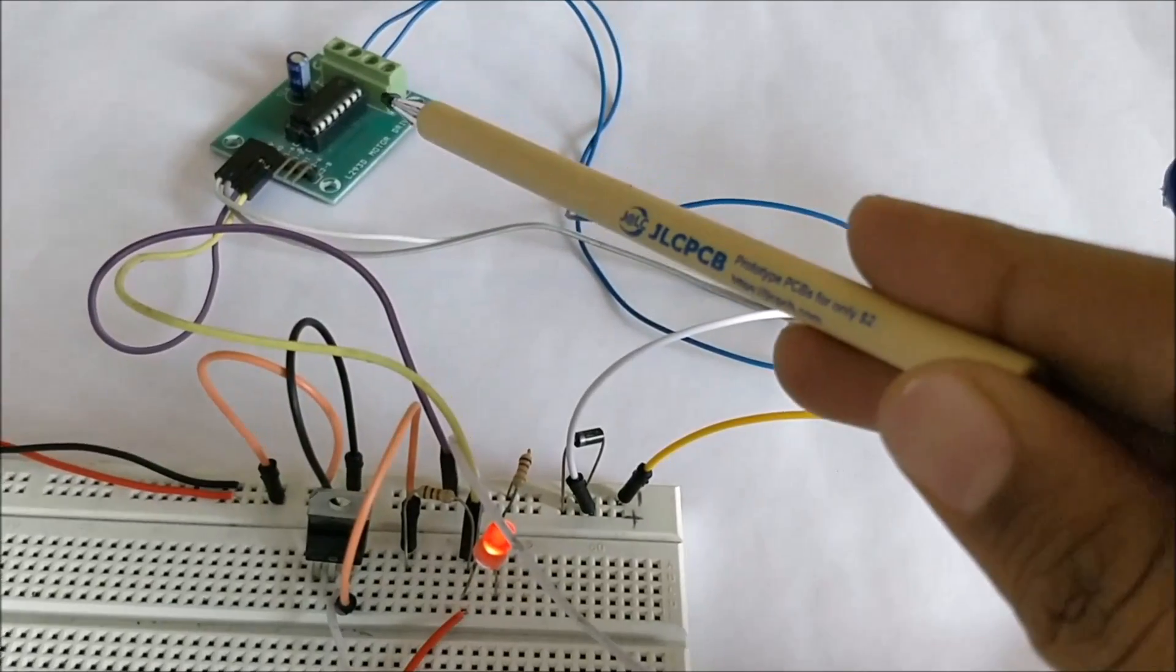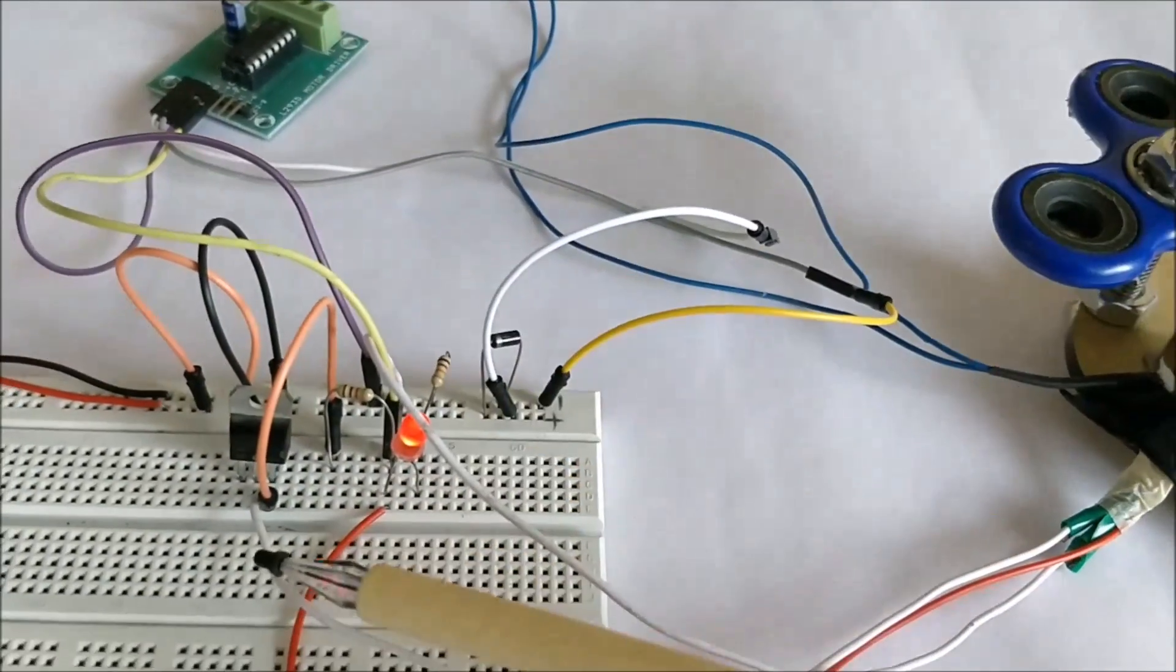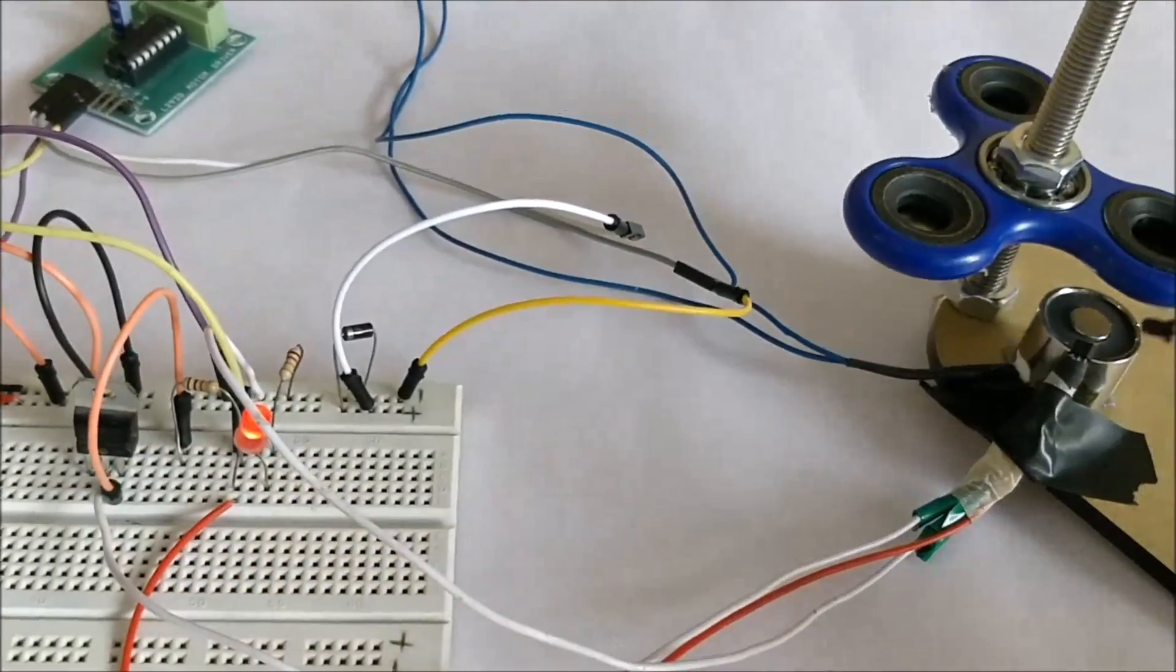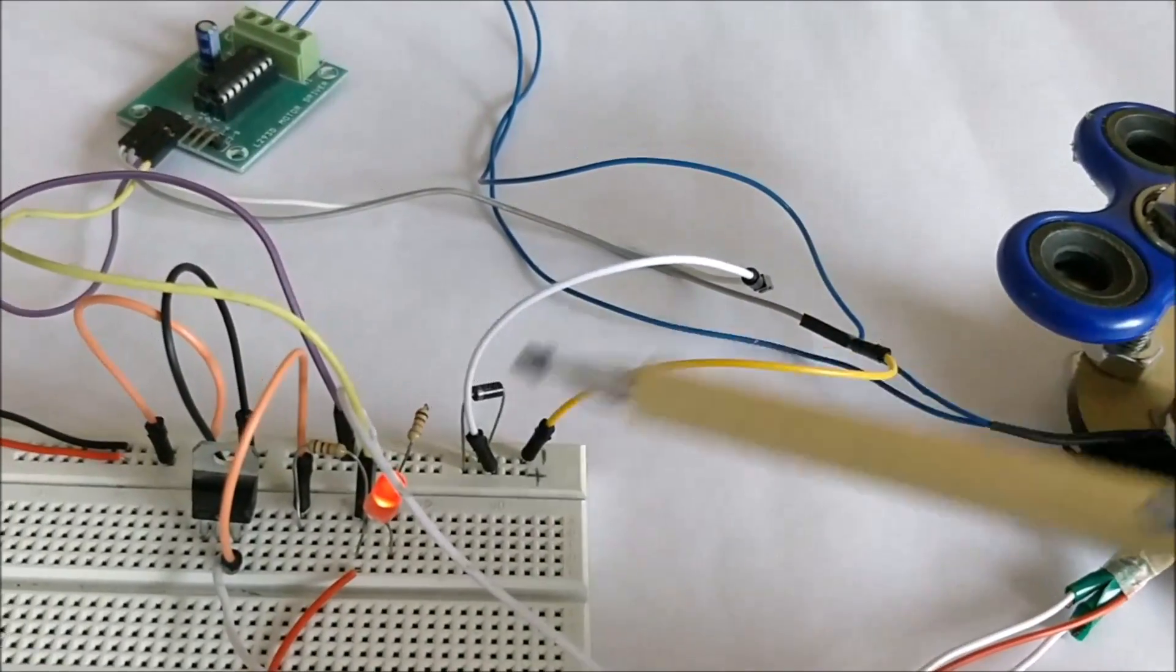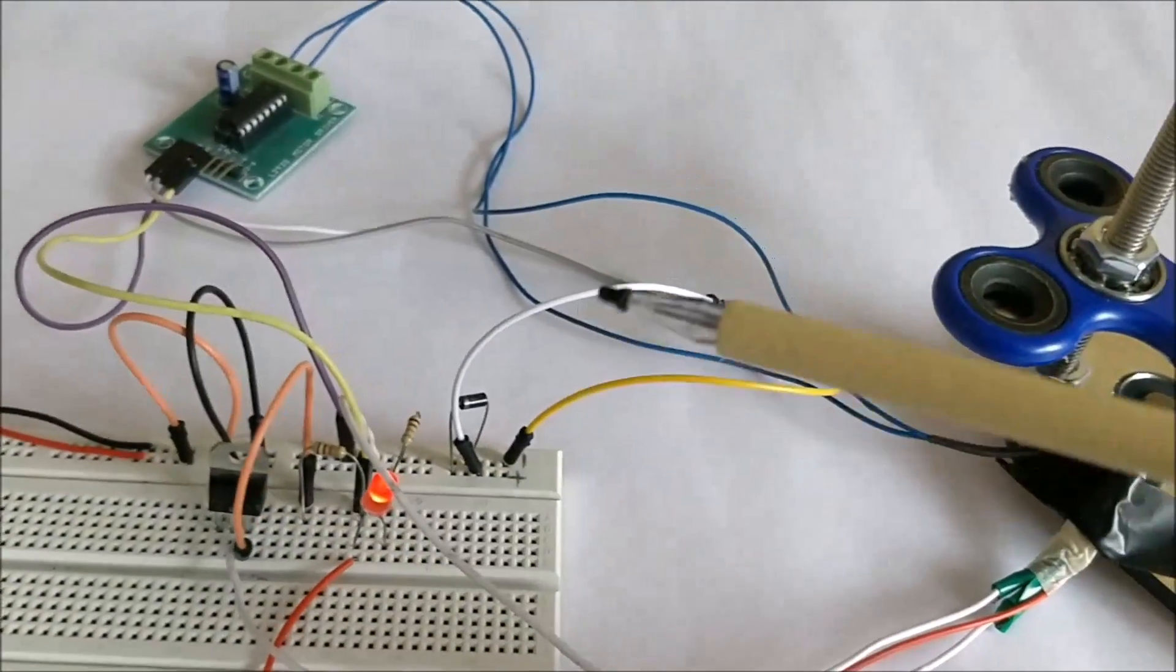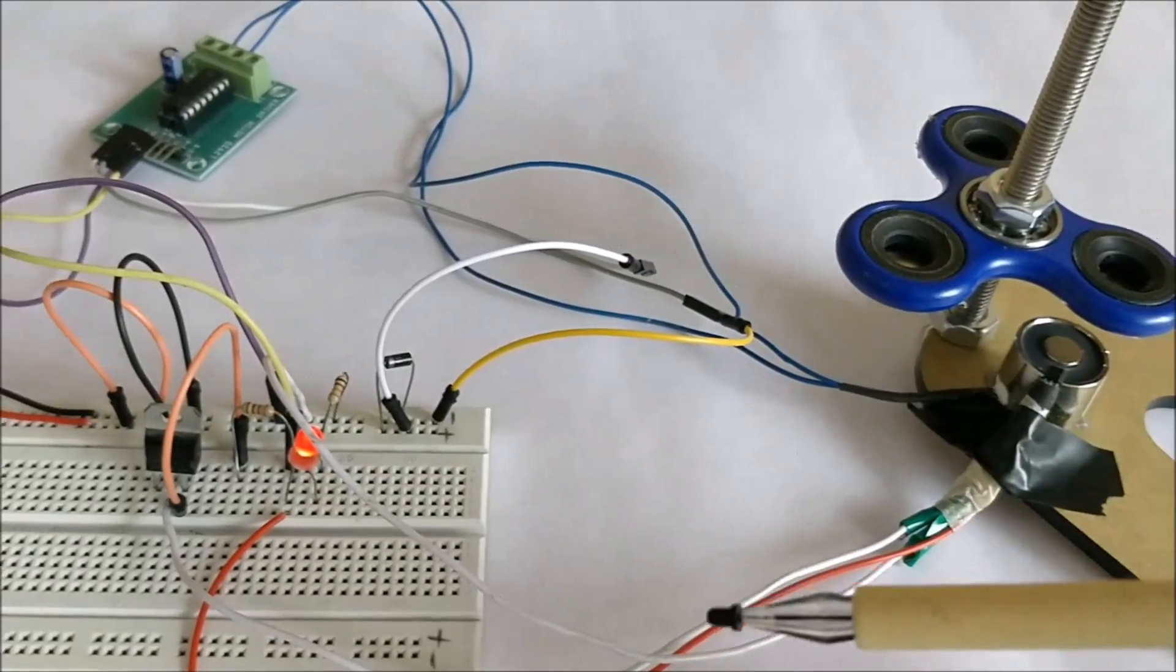So as you can see, I've used an L293D motor driver module, 7805 regulator, a hall effect sensor, a freewheeling diode, and all those stuff. The complete circuit diagram can be found at the link given in the description of the video. You can also find the theory behind this working and everything.